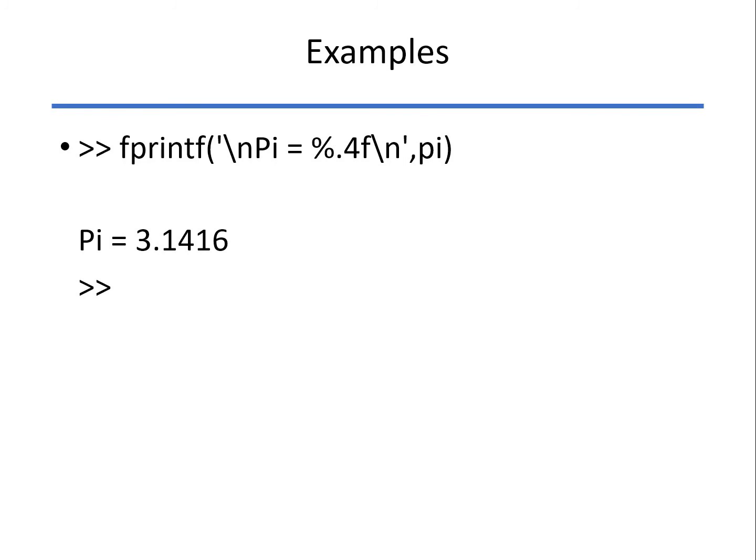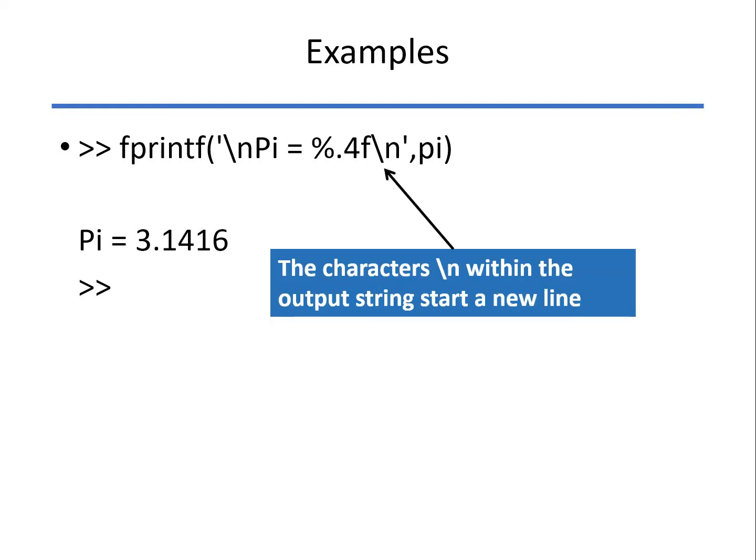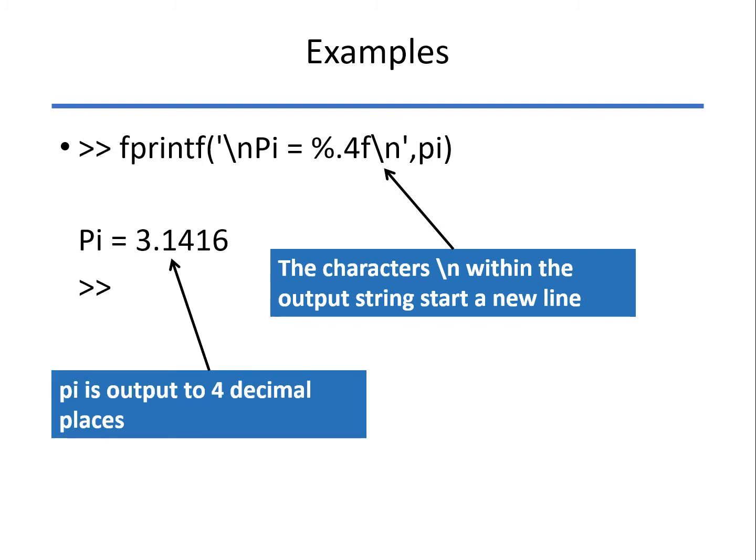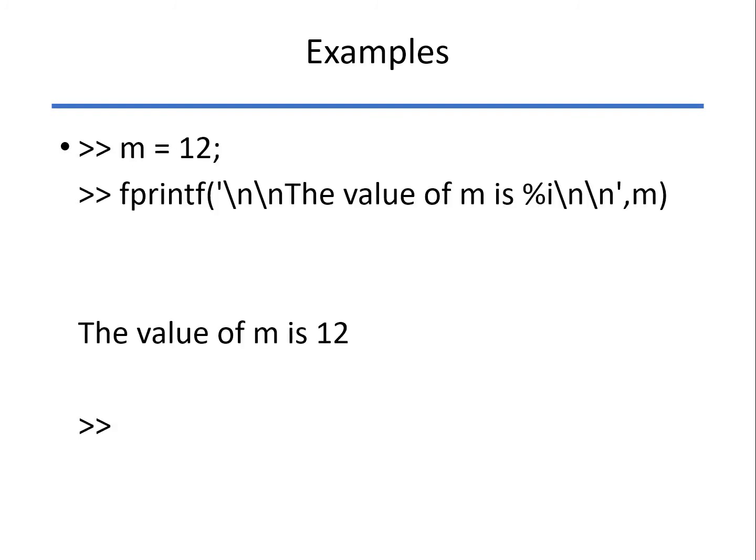And here's one more where we're going to skip a line before and after. Again, the 0.4F, there's no width specification, so it uses however much space it needs to be able to print this in fixed format with four decimal places. And finally, this last one skipped a couple of lines, so you can repeat the slash n as often as you want. And the percent i just means that the value of m in this case will be displayed as an integer.